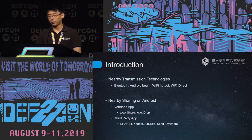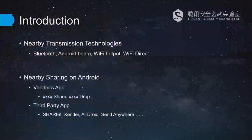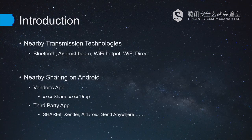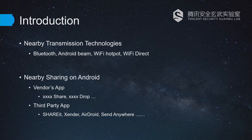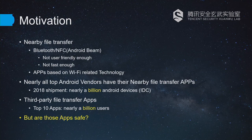Now let's begin Part One: Introduction. There are many nearby transmission technologies such as Bluetooth, Android Beam, and Wi-Fi Direct. But we focused our research on nearby sharing apps on Android, including smartphone built-in apps and third-party developer apps. Many users want nearby file sharing apps.